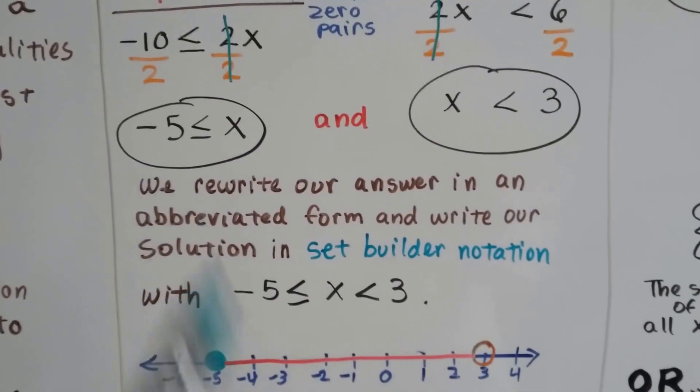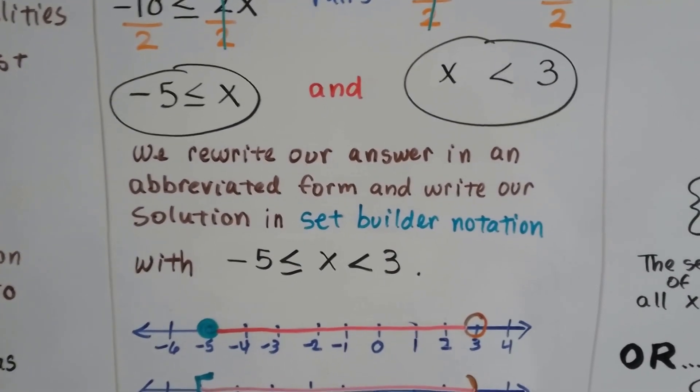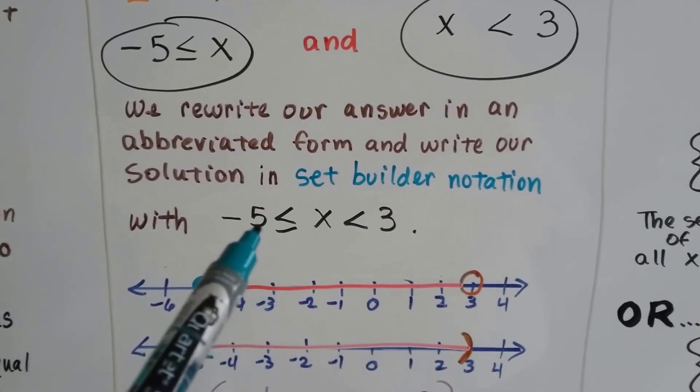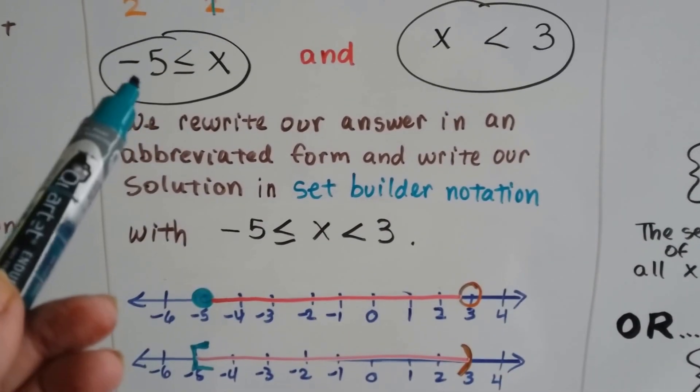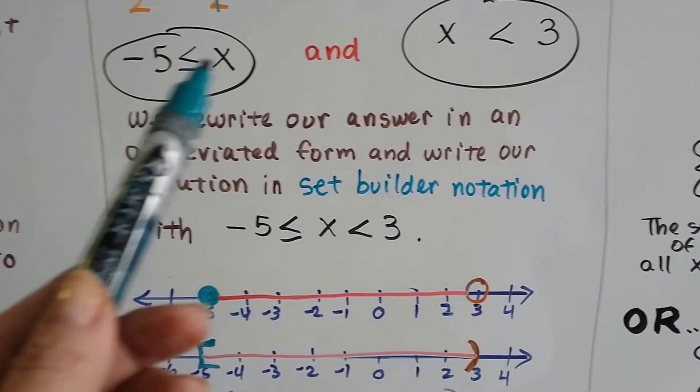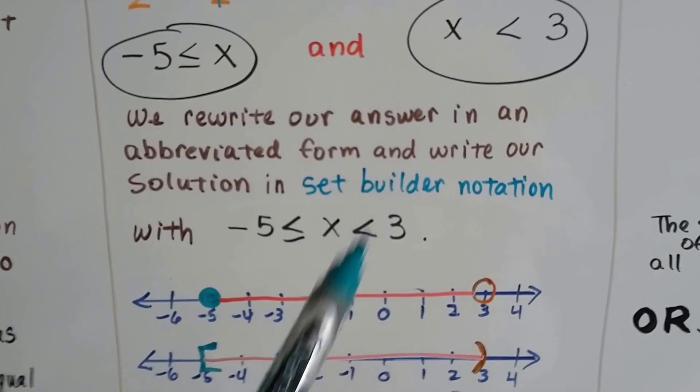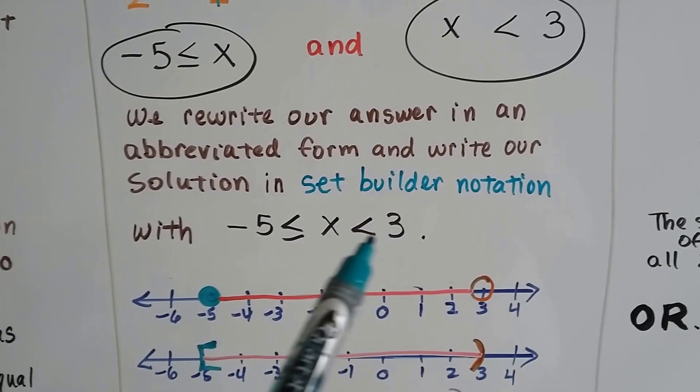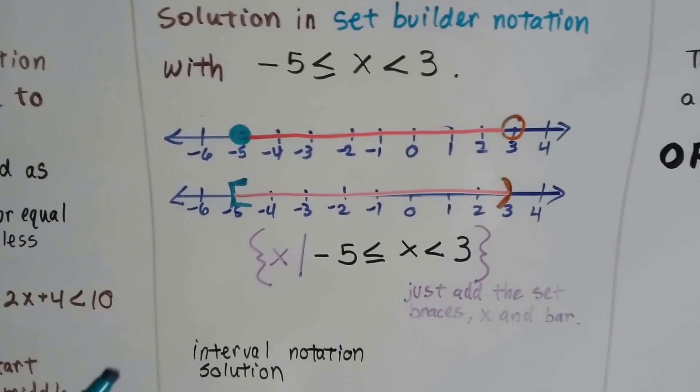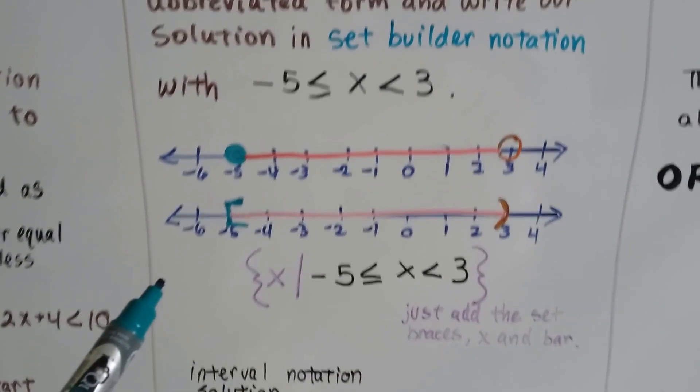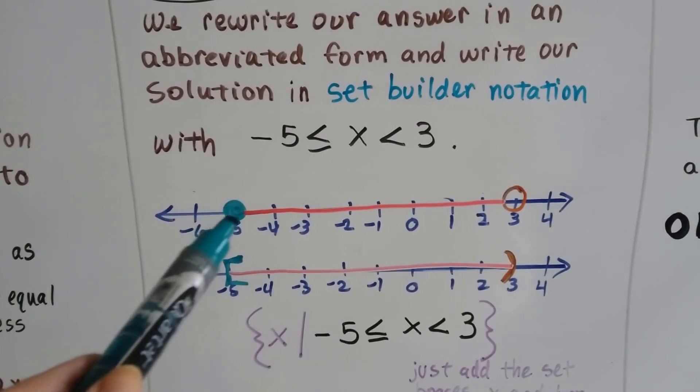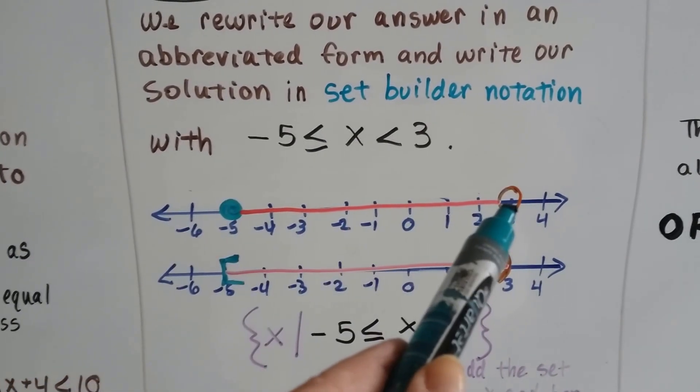There's our solution. Now we rewrite our answer in an abbreviated form and write our solution in set builder notation. We have negative 5 is less than or equal to x. We only need to write one of the x's, we don't need to write both of them. Then we put the less than 3. Graphed, it would look like this. It includes, because of the or equal, it includes the negative 5, but it doesn't include the 3. So we use a filled in dot and an open dot.